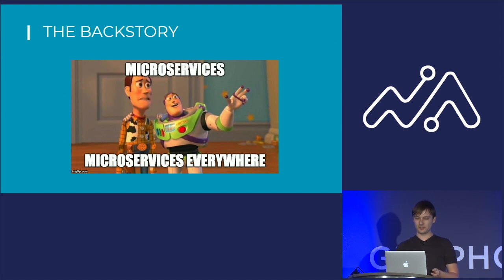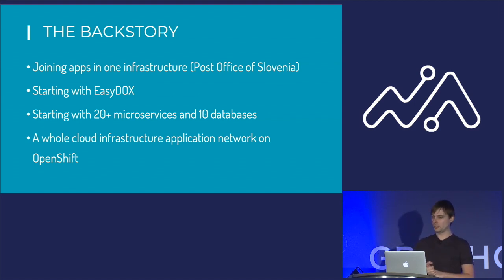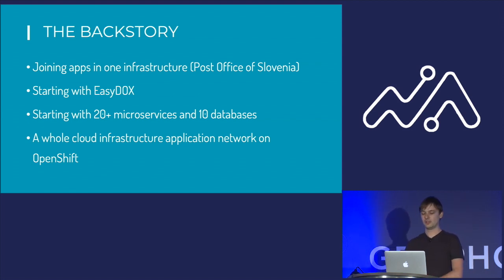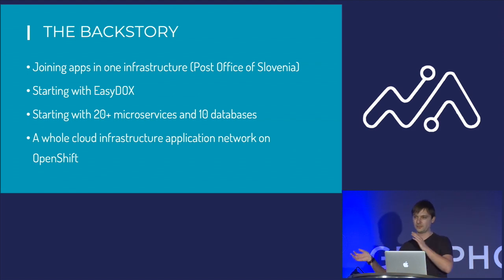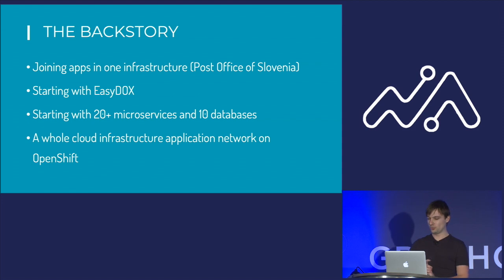The project we were doing was connected to the post office of Slovenia, and the idea was to get all of their apps into one big ecosystem — more like the apps you're using at Google, so single sign-in and all the rest of the stuff that comes with that. We started with an application called EasyDocs which, with the underlying ecosystem, is comprised of like 20-plus microservices and 10 databases. We put this on OpenShift and then gradually went into production.